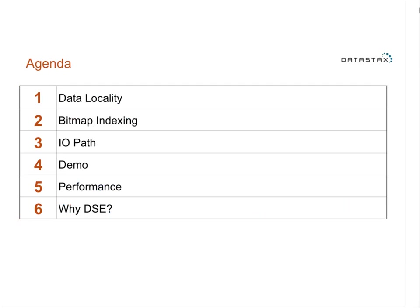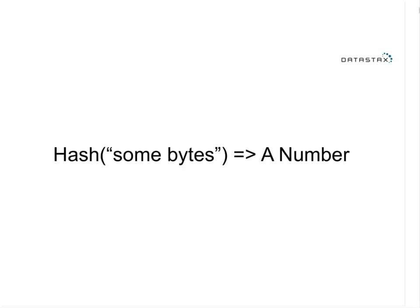There's going to be a lot of content, and it's going to get fairly technical. I'll do my best to make it as plain as possible, but we're going to go into a lot of stuff including bitmap indexing, hashing, data locality, and Cassandra — the fanout used for search and the IO path — and then hopefully we'll get into some performance tuning and GC tuning.